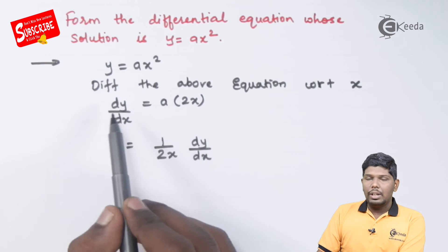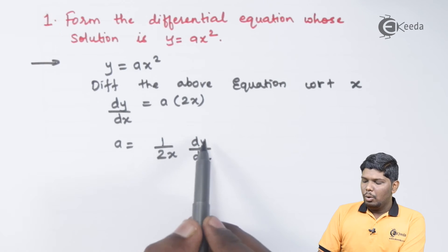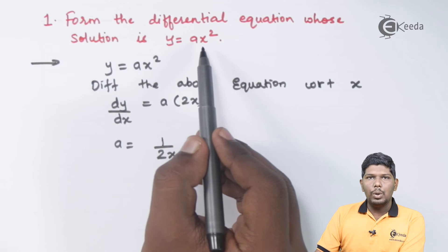Transferring 2x on the left hand side, we have a = (1/2x) × dy/dx. Now let us substitute this value of a in the given equation.